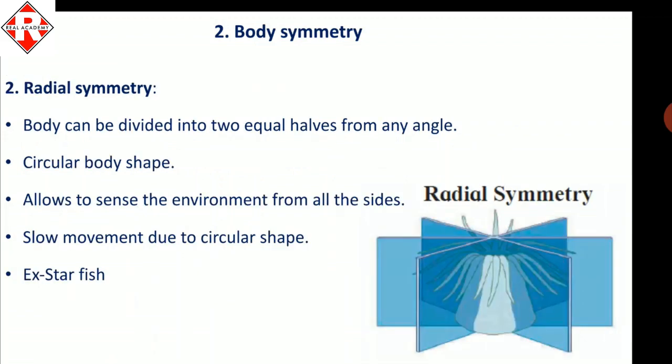Next is radial symmetry. The body can be divided into two equal halves from any angle but only from top to bottom, not horizontally. This animal is circular in shape and can sense the environment from all sides. However, because of the circular shape, this animal cannot move fast — they have slow movement. An example is starfish.